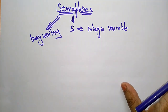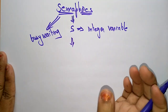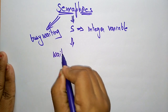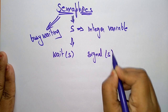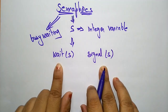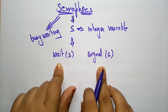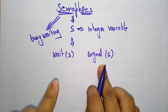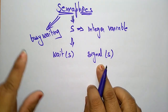The semaphore can be accessed via two indivisible atomic operations: wait(S) and signal(S). These are the two atomic operations used by the semaphore. What do we mean by wait and what do we mean by signal? Why is the semaphore using wait and signal to manage busy waiting?